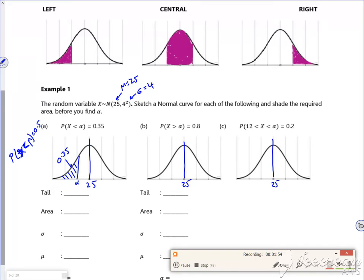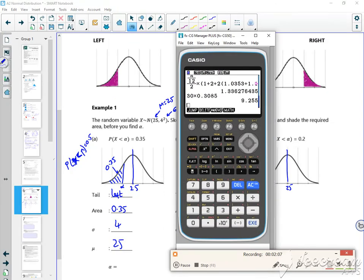It's a left hand tail, so you're going to set it up: the area is 0.35, my sigma value is 4, and my mu value is 25. I'm back to my calculator, so if I go menu and 2, exit F5 F1 F3 for inverse, I'm doing a left hand tail.